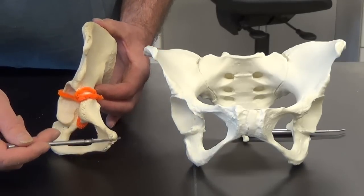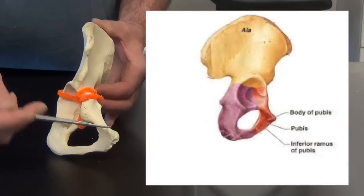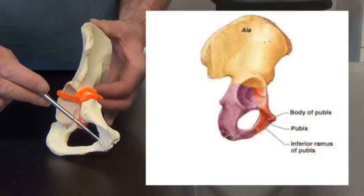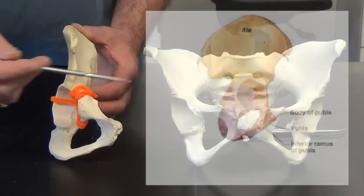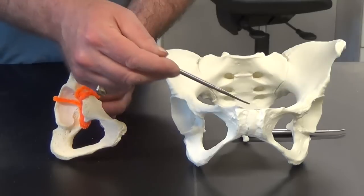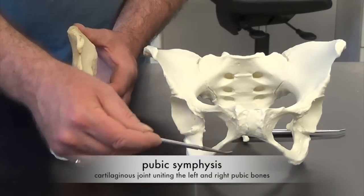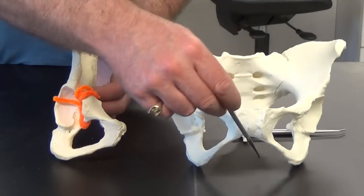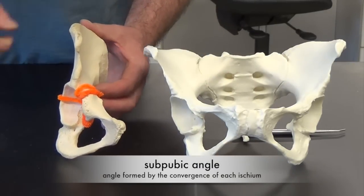On the pubic bone, we have the body of the pubis, and then this projection here that sticks out at a different angle is called the ramus. Where the two pubic bones meet, we have the pubic symphysis, and the angle beneath the two pubic bones is called the subpubic angle.